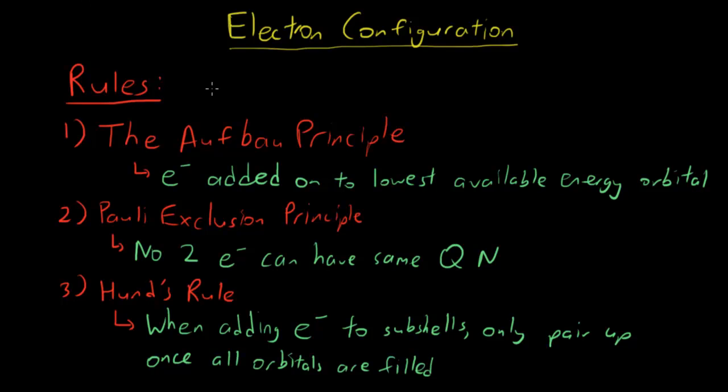Basically there are three rules for electron configuration. The first one is the Aufbau principle, and what it says is that electrons are added on to the lowest available energy orbital. So if we have 1s, 2s, and 2p, the electrons are always added on first to the 1s, then the 2s, then the 2p's. That's what the Aufbau principle says.